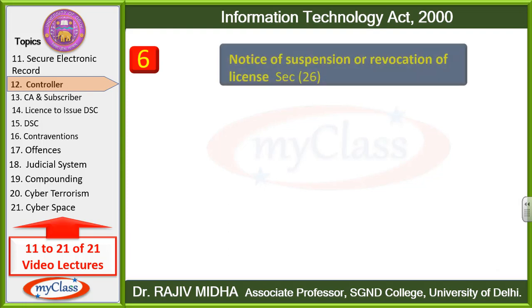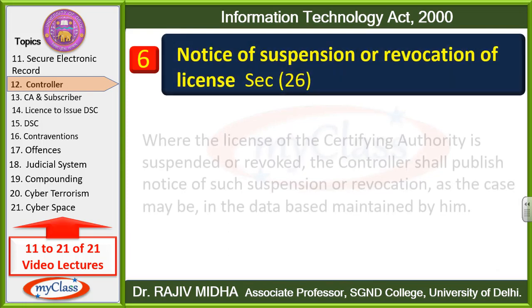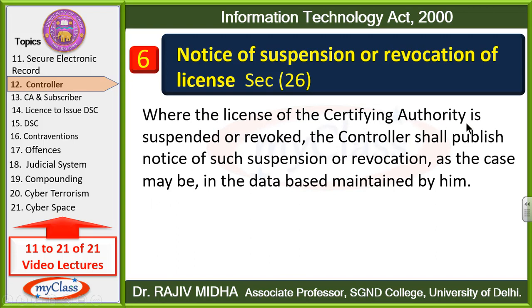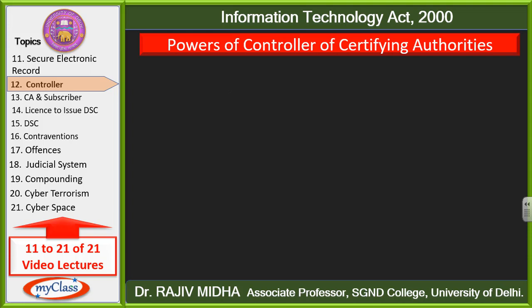Sixth function: notice of suspension or revocation of license — Section 26. Where the license of a certifying authority is suspended or revoked — jahan par certifying authority ke license ko kuch samay ke liye temporary time ke liye suspend kiya gaya hai, ya cancel hi kar diya gaya hai — the controller shall publish notice of suspension or revocation. Controller is baat ki jaankari publish karega ki is particular certifying authority ka license cancel kar diya gaya hai ya suspend kar diya gaya hai, aur is baat ki woh jaankari apne database ke andar bhi maintain karega.